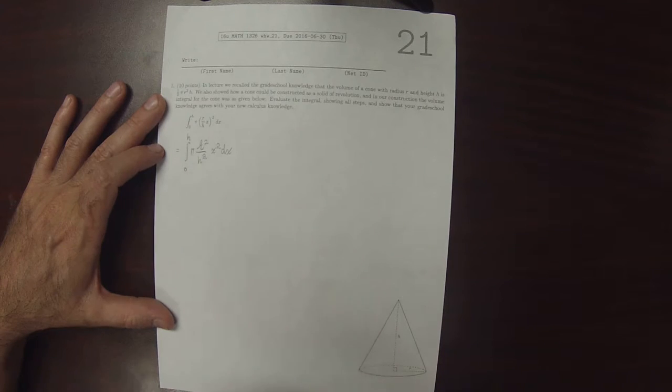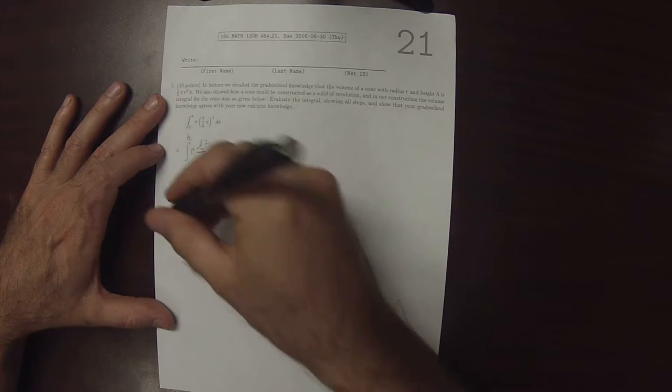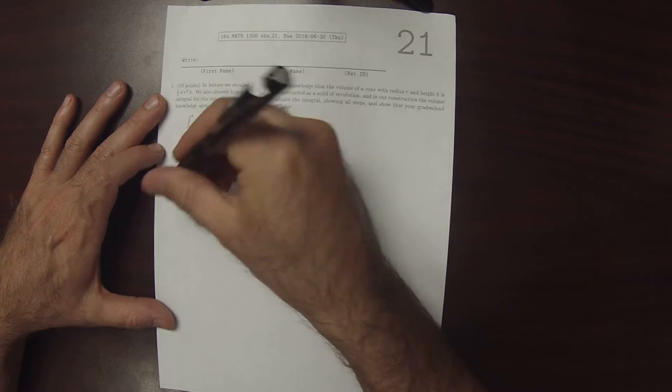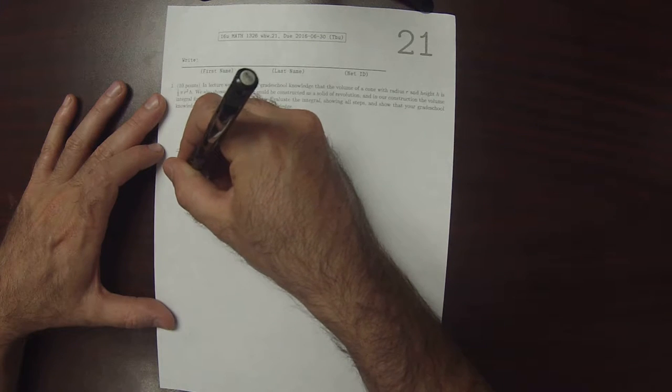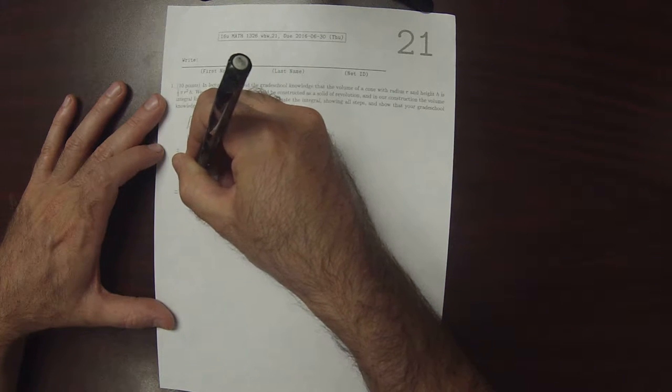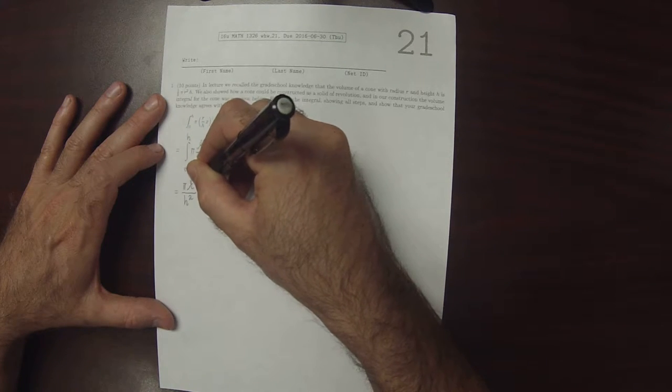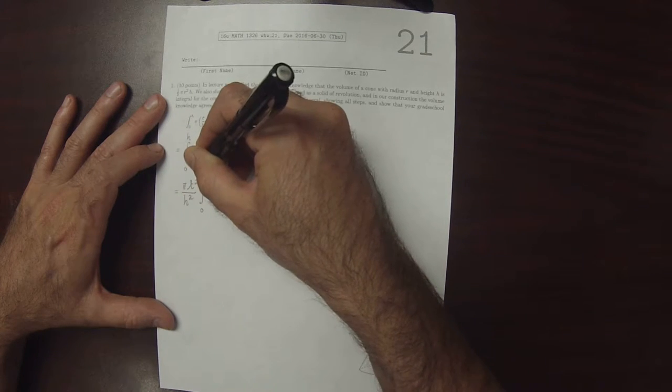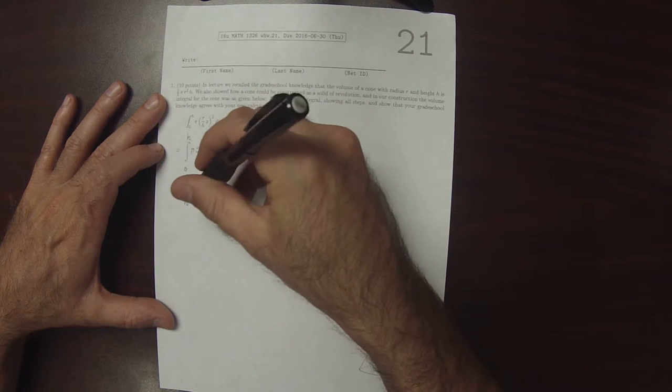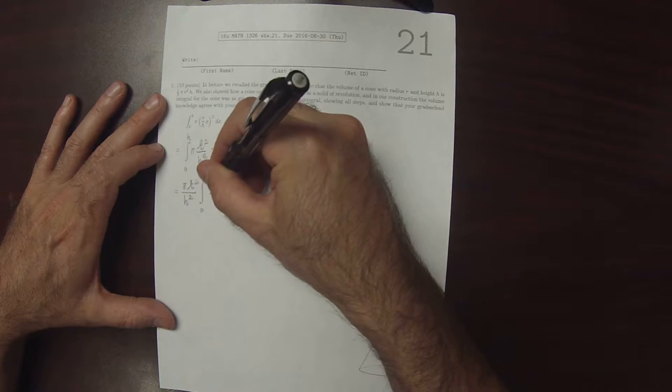Then pi r squared over h squared is a constant that can be factored out. So this would be pi r squared over h squared integral 0 to h of x squared dx.